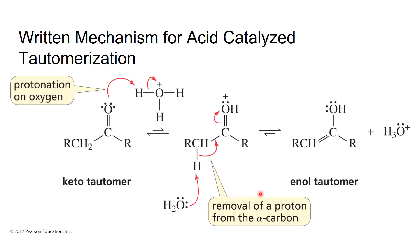Here is the acid-catalyzed tautomerization. The first step is the protonation of the oxygen atom. The acid protonates it, giving us a positively charged oxygen still doubly bound to that carbon. Then the conjugate base — water — comes down and grabs the acidic hydrogen from the alpha carbon, kicking those electrons up to form a new double bond between the two carbons.